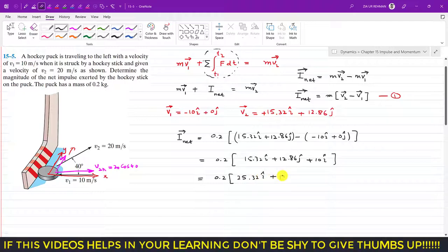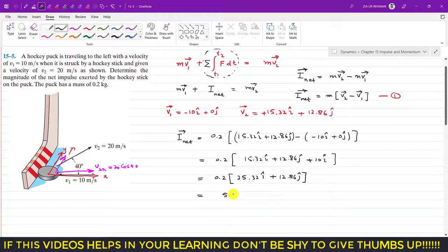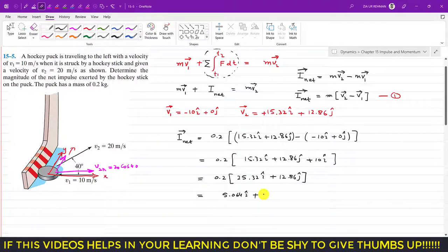So if you multiply this 0.2 inside, that will be 25.32 times 0.2, this gives us 5.064i. Plus 0.2 times this component magnitude, so that is 12.86 multiplied by 0.2, this gives us 2.572j. This is the net impulse vector.